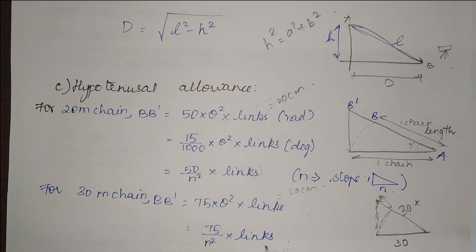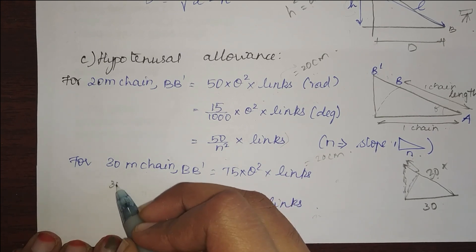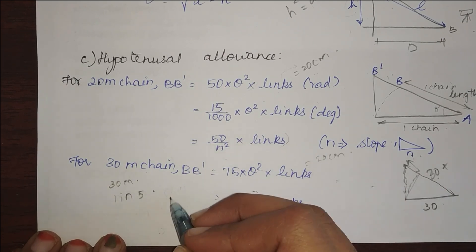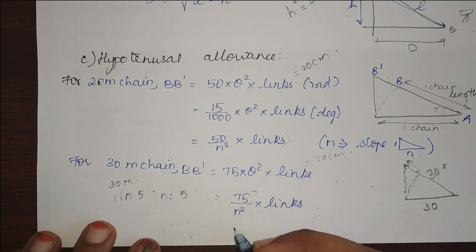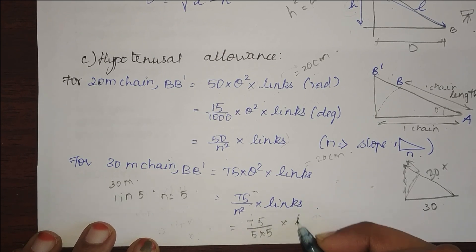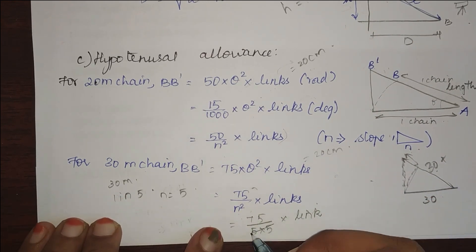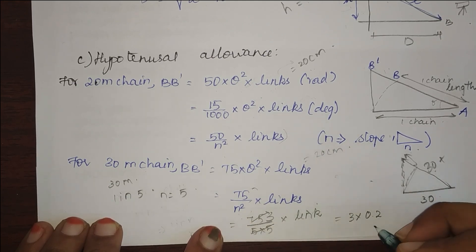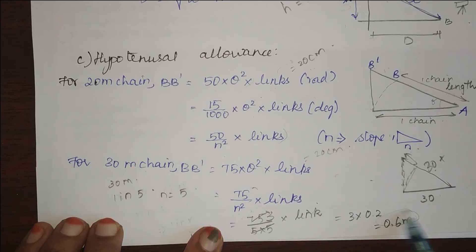For a quick example, consider a chain of 30 meter and the slope is 1 in 5. My n value is equal to 5 and the formula is 75 by n squared into links. Substituting the formula, it is 75 divided by 5 into 5 into links. A link is 20 centimeter, so this gives me 3. It is 3 into 0.2 which is 0.6 meters. My hypotenusal allowance is going to be 0.6 meters.